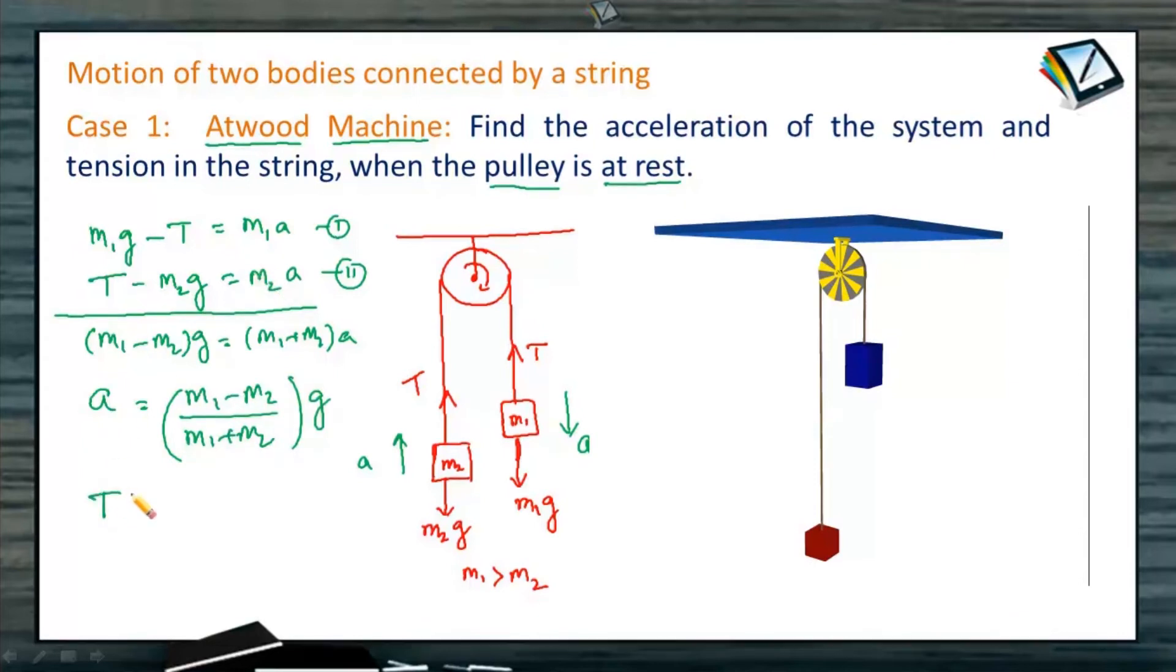So acceleration of the system will be M1 minus M2 divided by M1 plus M2 into g. Substituting this value of acceleration in any of the equation, we get tension T.